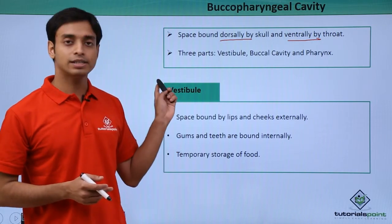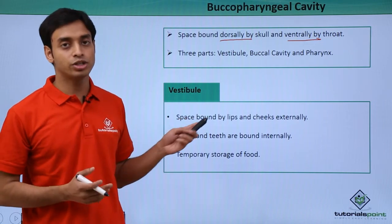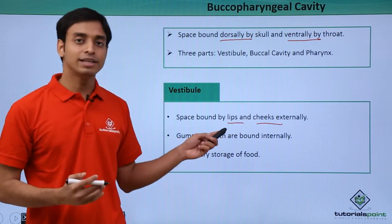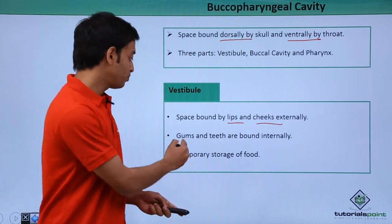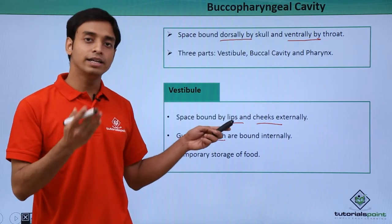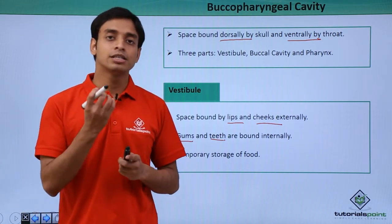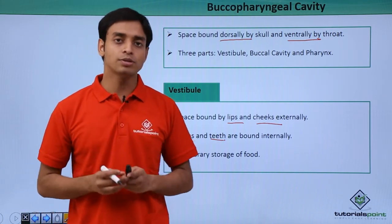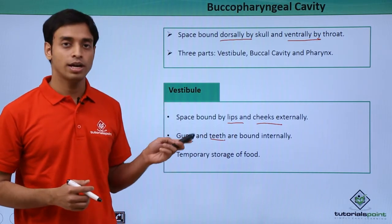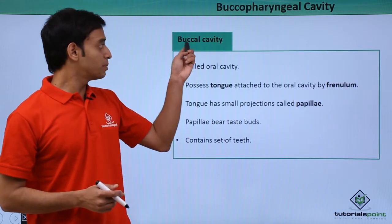The vestibule is the space which is externally bound by the lips and the cheeks, and internally it is bound by the gums and the teeth. This is the area which actually acts as a space where food can be stored temporarily.